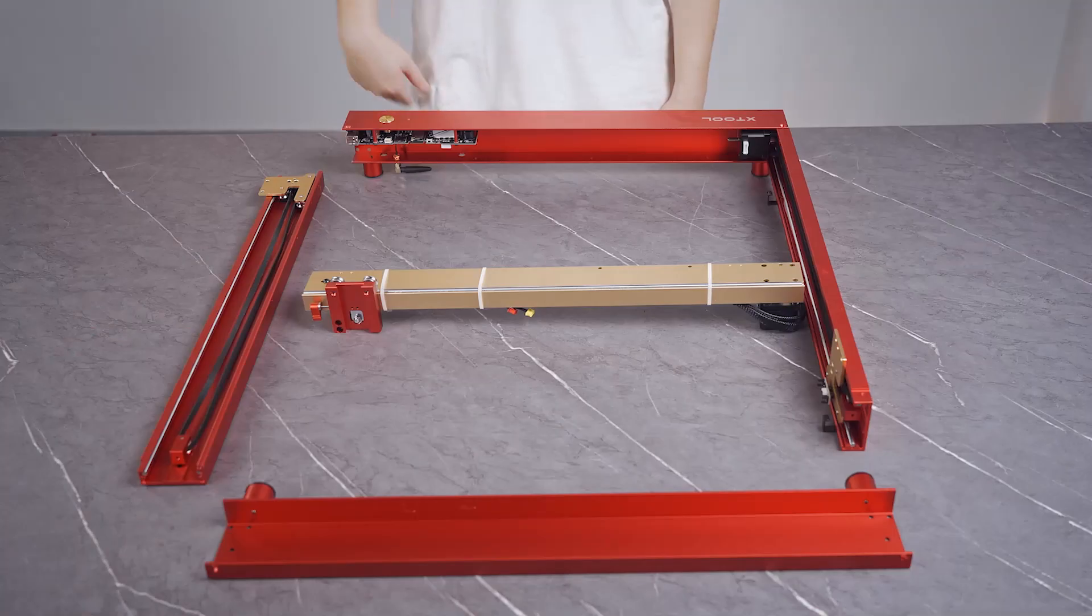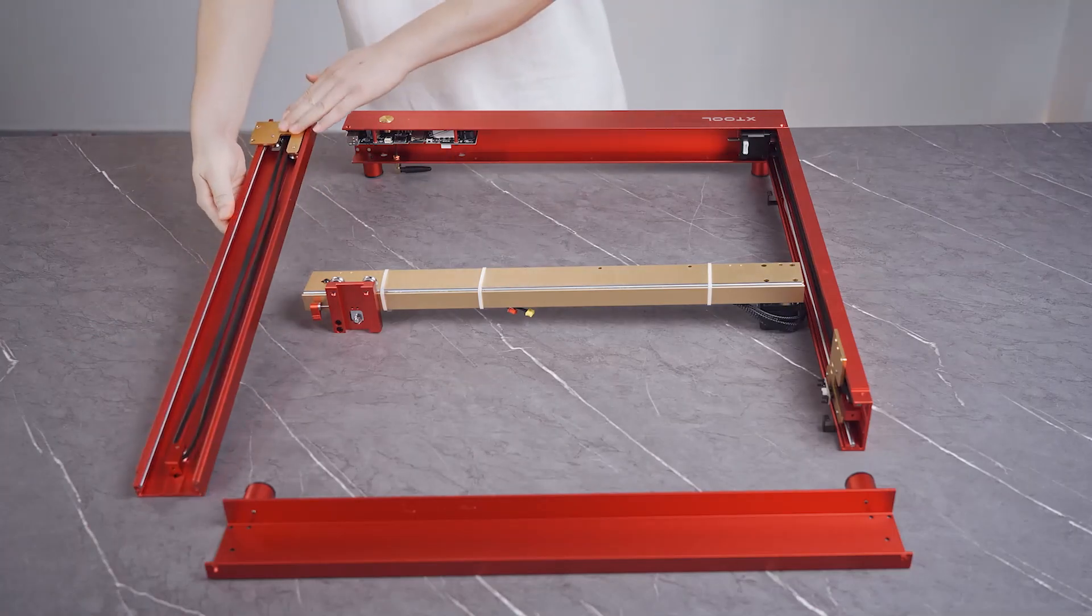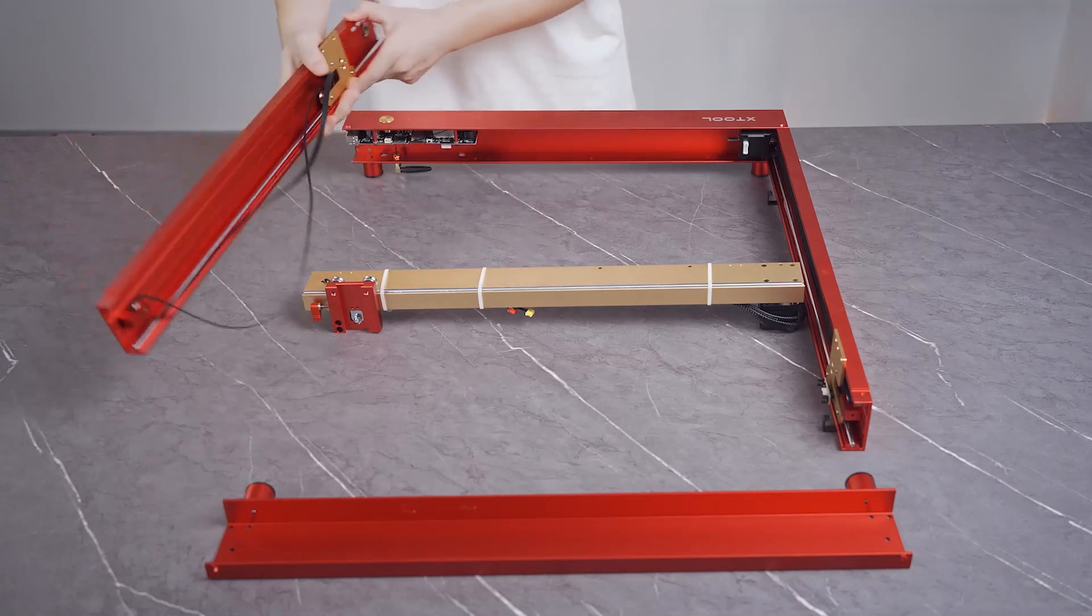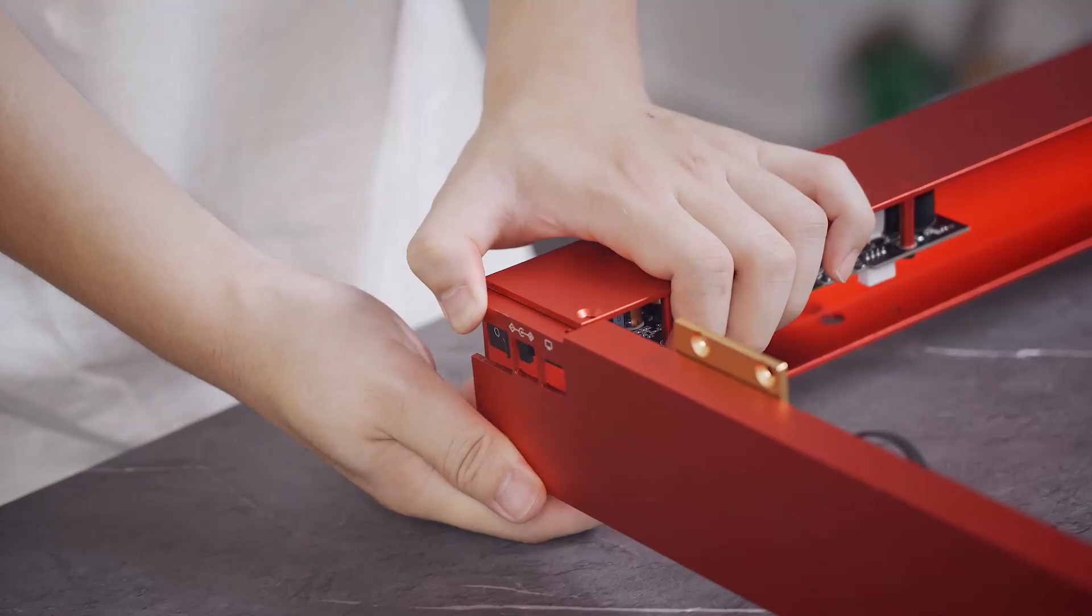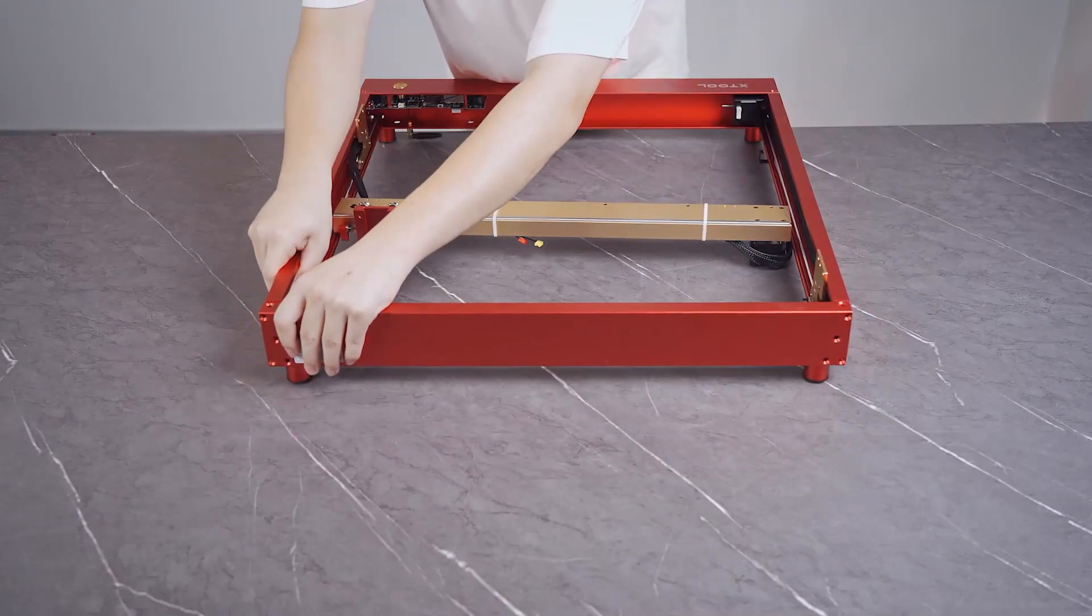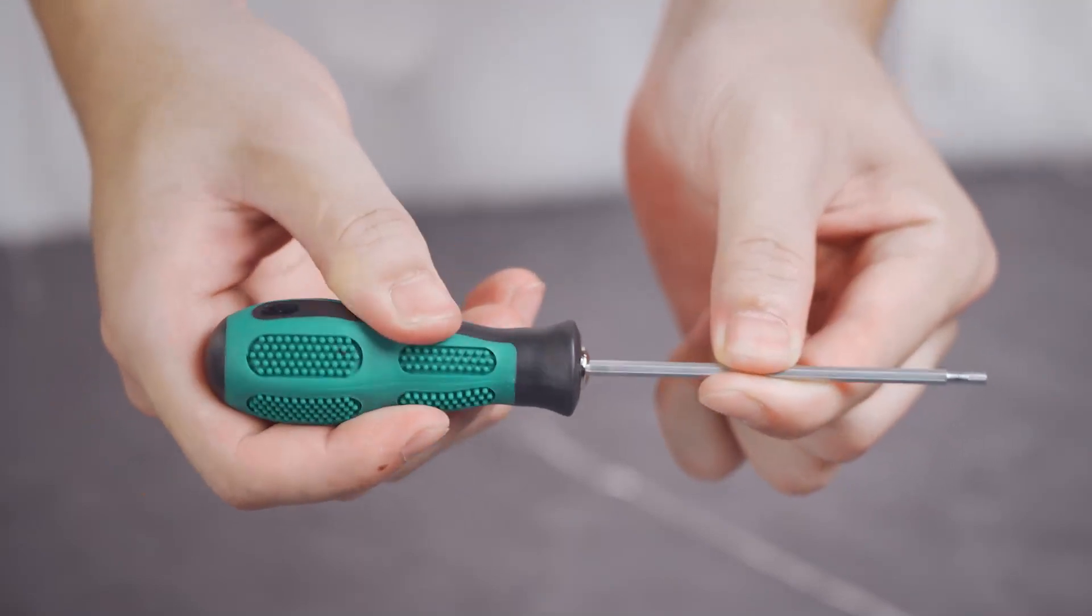Align the power switch, power port, and USB port with the openings on the right plate. Use screws to hold the side plates together.